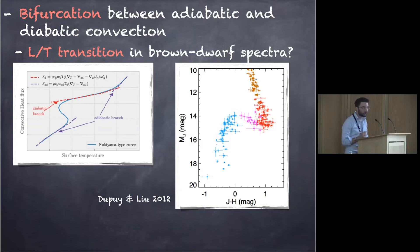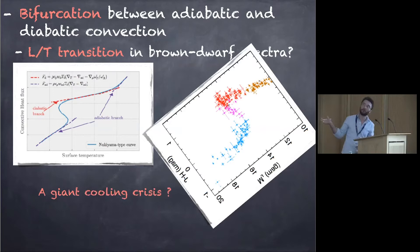And if you play a bit with the diagram, just for fun, it really seems that you're seeing that directly into the color magnitude diagram. That's why we call that now possibly a giant cooling crisis by similarities with the boiling crisis.